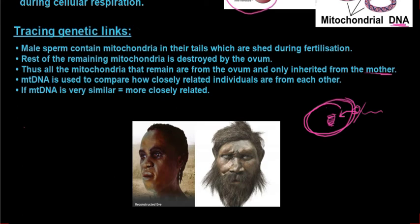We can actually take the mitochondrial DNA and trace it back to a mitochondrial Eve. This is a reconstructed version of what they think mitochondrial Eve looked like. She was from Africa and lived around 200,000 years ago. But this does not mean she was the first ever female to live on earth, or even the first female of our species. It's just that the other women who lived before her didn't pass on their mitochondrial DNA.